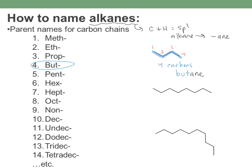We combine roots like meth, eth, prop, but, pent, etc. with the ending of whatever type of functional group the molecule has. In these videos we're just doing alkanes. For example, a chain of 8 carbons — counting 1 through 8 — is octane, since it's an alkane with all carbons and hydrogens. And 10 carbons gives us decane. So I've drawn butane, octane, and decane — the simplest examples.